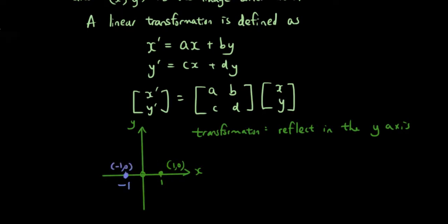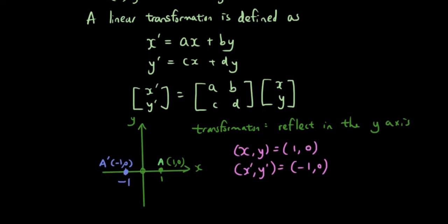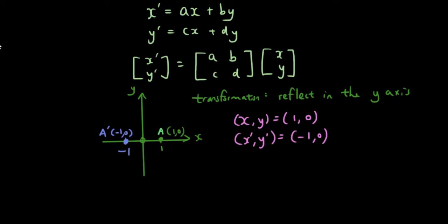If I call the original point A, then the image point will be A dash. So if x, y equals 1, 0 then x', y' equals negative 1, 0.